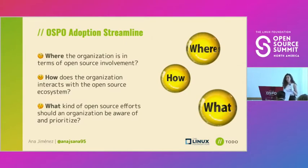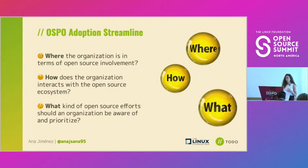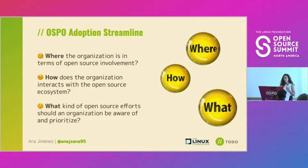When people are aware of that and are at that point, some questions come to mind. For instance: where is the organization in terms of open source involvement — what place of the journey is this organization at? How is my organization interacting with the open source ecosystem at this moment? And what kind of open source efforts should the organization be aware of and prioritize, both in the first place and in the long term? These questions can help streamline OSPO adoption.